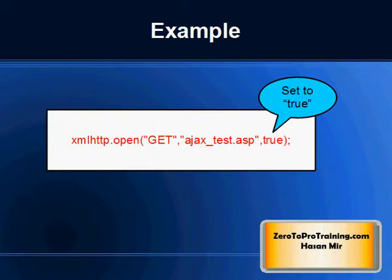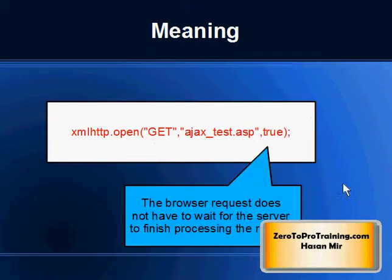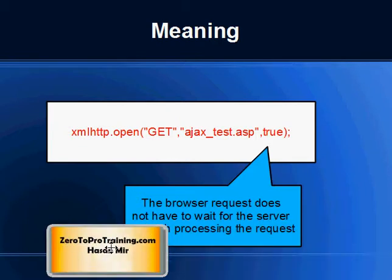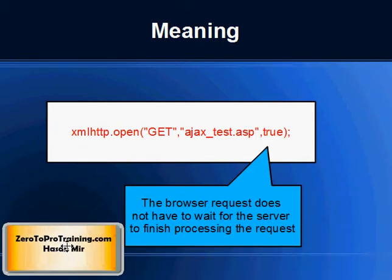What does asynchronous mean? If you set the value in the third parameter of the open method as true, it means the browser does not have to wait for the server to send the result back.